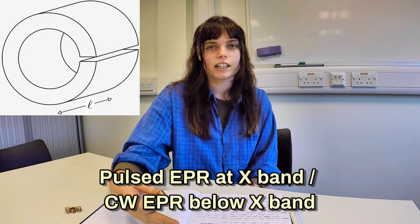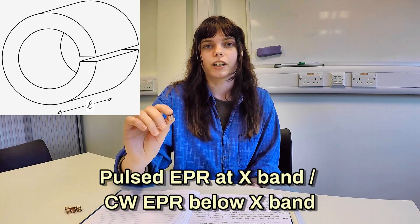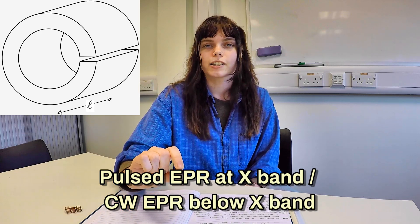So instead what we use is a modification on the loop gap resonator. Loop gap resonators are used for expand EPR and consist of a loop of copper which acts as an inductor and a gap of air which acts as a capacitor. How we've modified this is that we've added extra capacitors across the gap which increases the capacitance and therefore reduces the frequency.